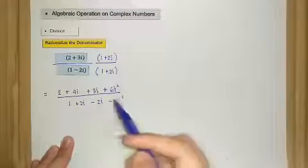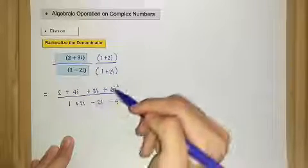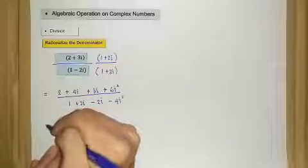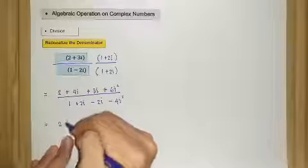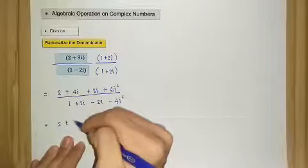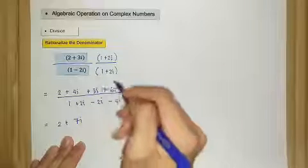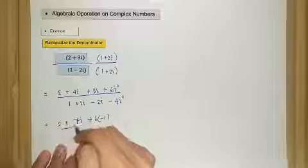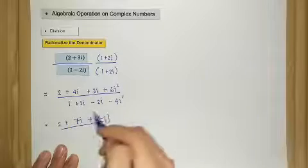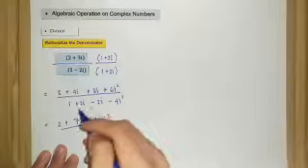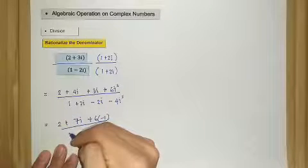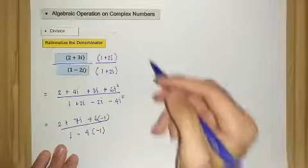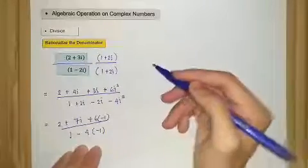Now we simplify. Since i squared equals negative 1, we substitute. In the numerator, 4i plus 3i is 7i, and 6 times negative 1 gives negative 6. In the denominator, 2i minus 2i is zero, leaving 1 minus 4 times negative 1.